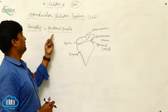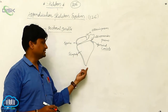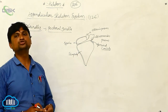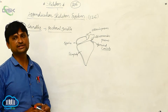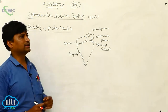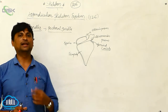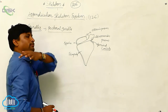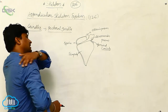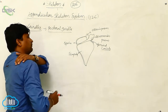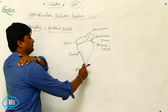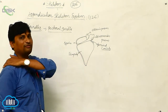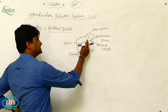The pectoral girdle consists of a triangular-shaped part. Two bones are associated with the formation of the pectoral girdle. One is the collar bone, which is the clavicle, and on the backside there is a triangular-shaped part we call the scapula.